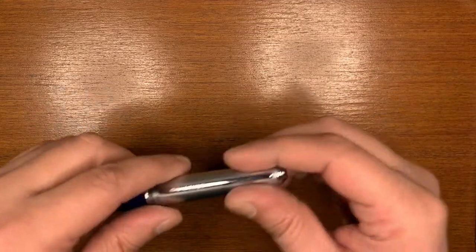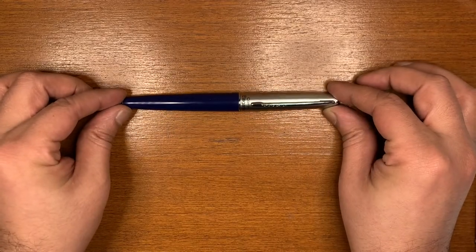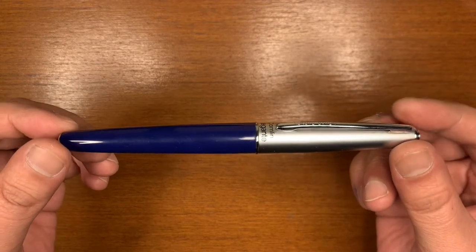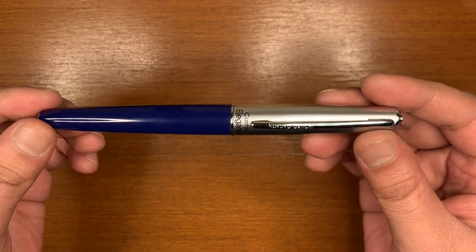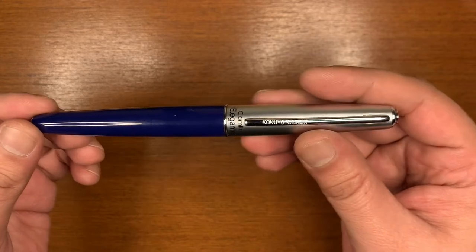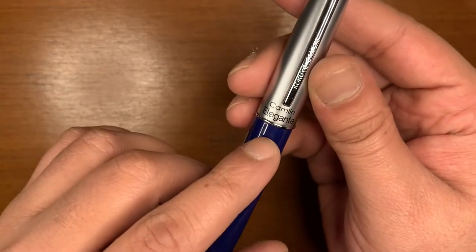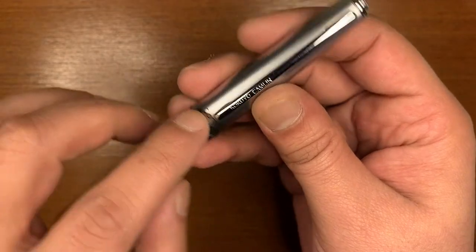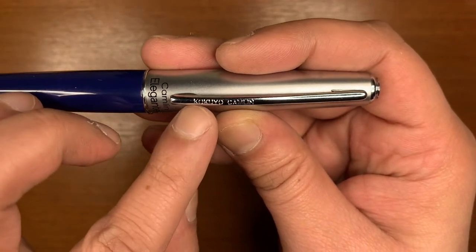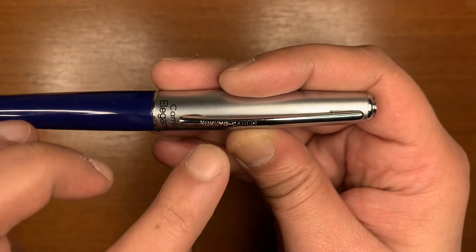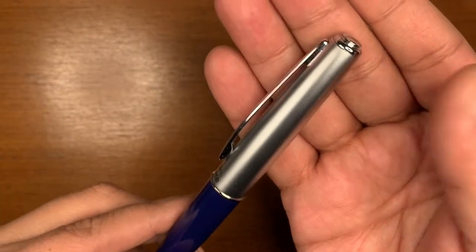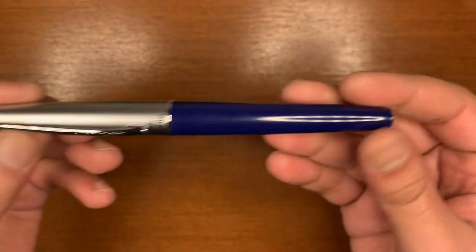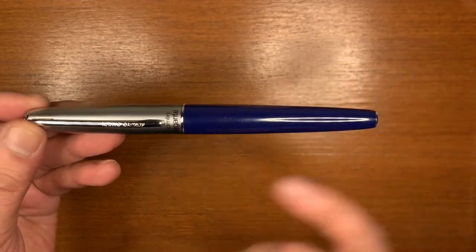Now this is the pen and it's really quite a nice looking pen. I think the name is quite apt, the Camlin Elegant. As you can see over here it has the name written over here. It also has the name of Kokuyo and Camlin written on the clip. The finial is a slightly raised finial over here and overall it seems like a fairly handsome pen.